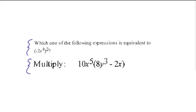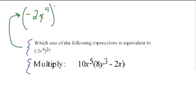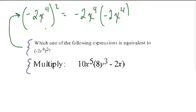So let's break this down in pieces. We'll start with the first one: negative 2x to the fourth squared. What does that mean? Well, that means take negative 2x to the fourth and multiply it by itself — in other words, square this whole term. That's what this little exponent is referring to.